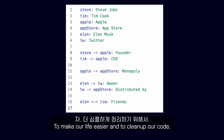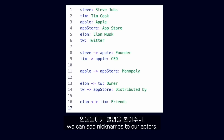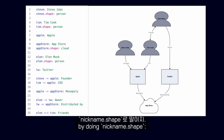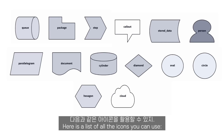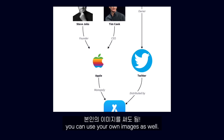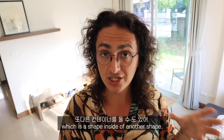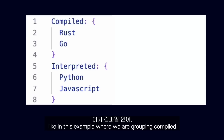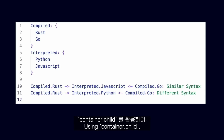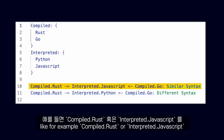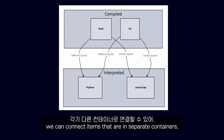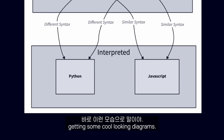To make our life easier and clean up our code, we can add nicknames to our actors. We can also change the shapes of our actors if we want to by doing nickname.shape. Here is a list of all the icons you can use. But if you don't like any of them, you can use your own images as well. We can also have containers, which is a shape inside of another shape. Like in this example where we are grouping compiled and interpreted programming languages. Using container.child — like for example compiled.rust or interpreted.javascript — we can connect items that are in separate containers, getting some cool-looking diagrams.